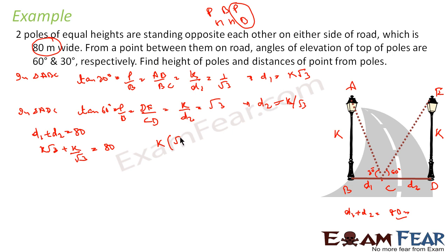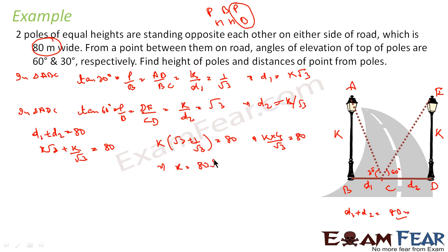Taking k common: k(√3 + 1/√3) = 80. This simplifies to k × (3 + 1)/√3 = 80, giving k × 4/√3 = 80. Solving, k = 80√3/4 = 20√3. So the height of the pole is 20√3 meters.